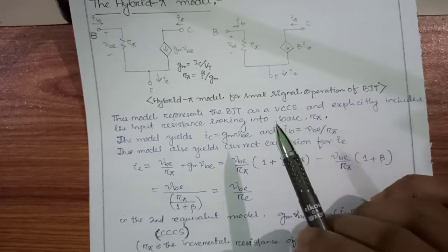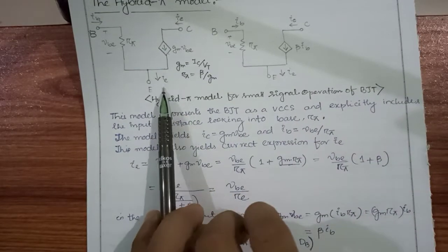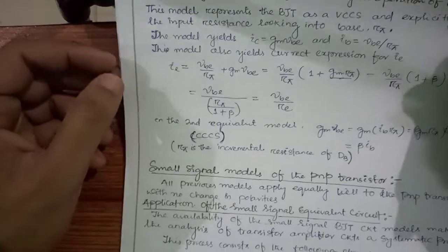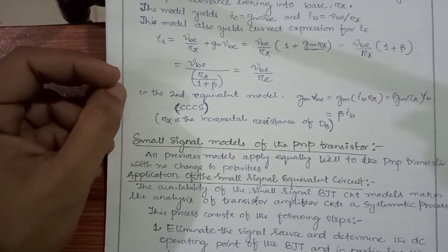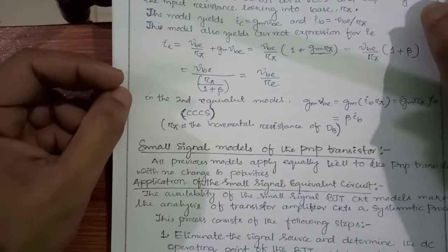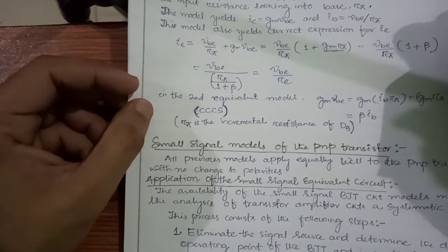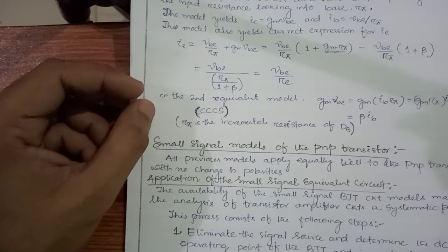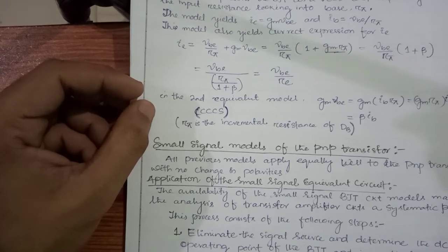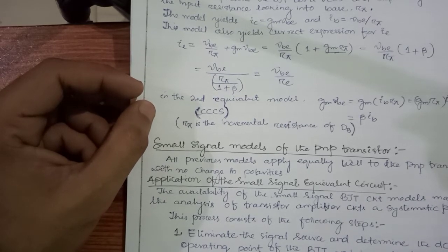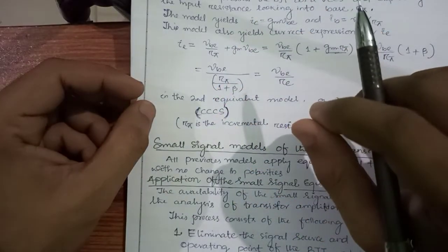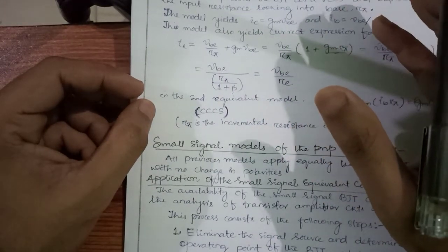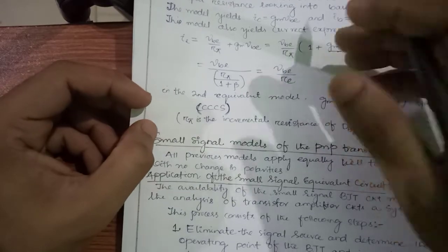Similar small signal operation applied to NPN transistors can also be applied to PNP transistors in the same manner — there is very little change between NPN and PNP. In our circuits, we mostly use NPN transistors. There are some sign changes: V_CE is replaced by V_EC, V_BE is replaced by V_EB, and the direction of currents also changes.